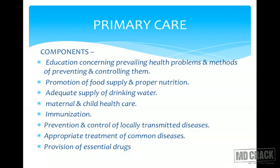Promotion of food supply and proper nutrition is also a component of primary health care. Although it is not regularly a doctor's job, it is still a component. Other components include adequate supply of drinking water, maternal and child health services, immunization services, prevention and control of locally transmitted diseases, and appropriate treatment of common diseases with provision of essential drugs. Promotion of food supply, proper nutrition, and adequate drinking water supply are also functions of primary health care.